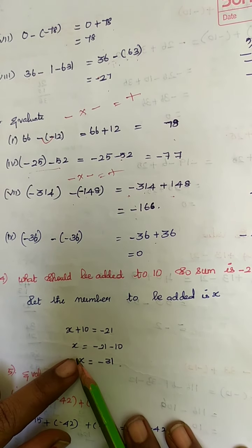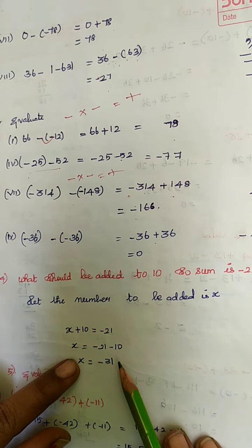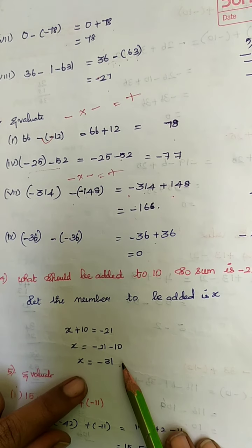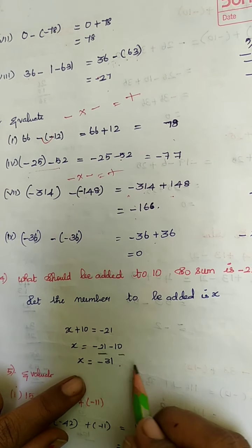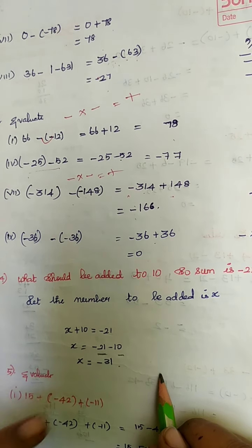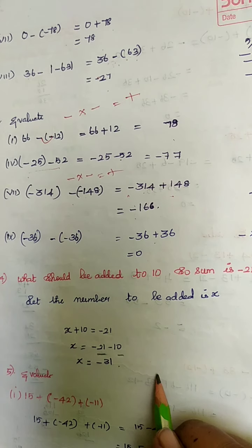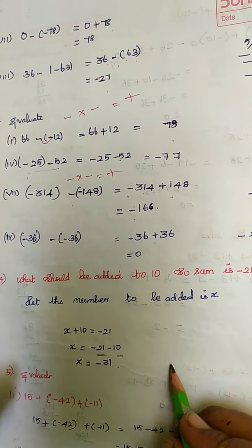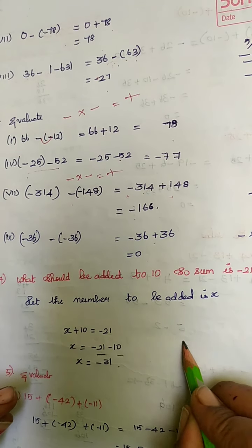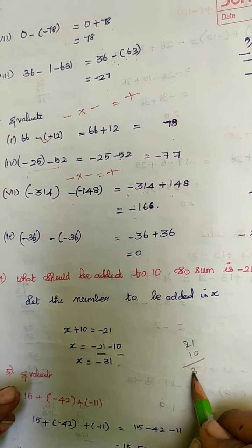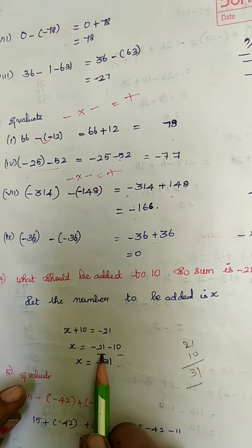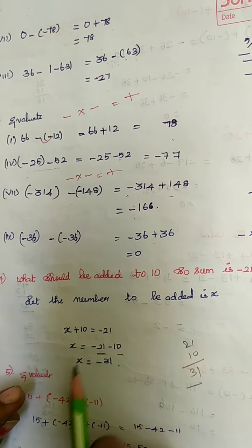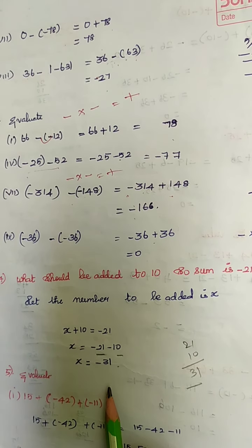So we will keep x on one side, take plus 10 to the other side so it becomes minus 10. Here you have the same symbol so you are going to add it and write the bigger number's symbol. When you add 21 and 10 it is 31, and the bigger number is 21, its symbol is minus, so your answer is minus 31.